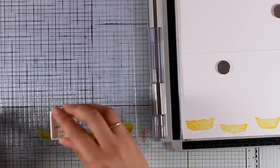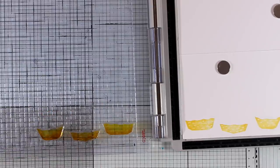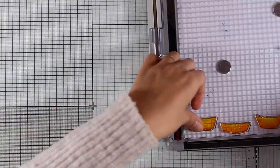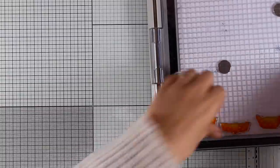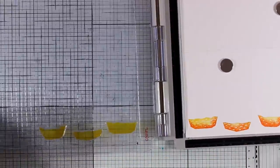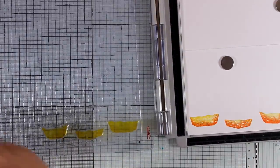I stamped the pots first with yellow ink, and now I'm going and adding a little bit of orange only at the base. This way I'm adding just a touch of a shadow at the bottom, which helps my pots look more dimensional.